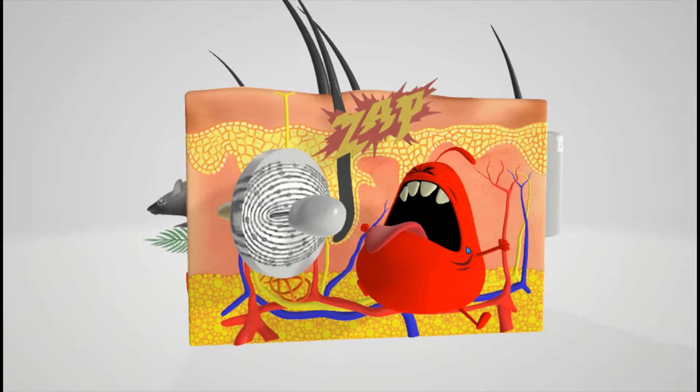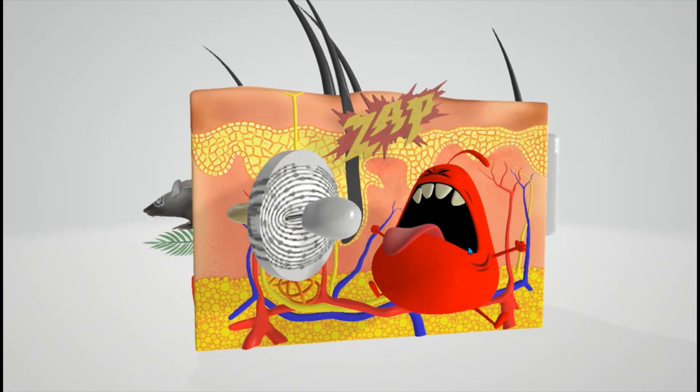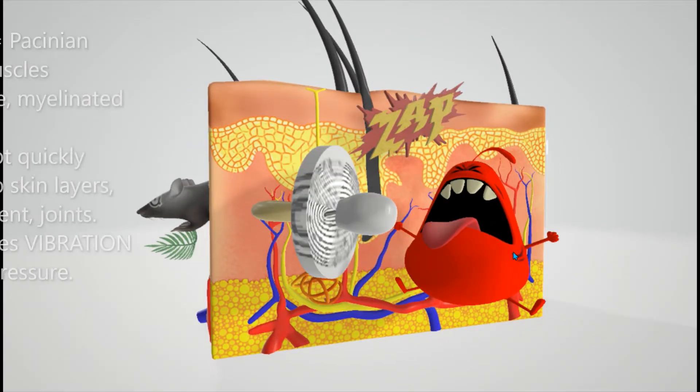Then we go up to this guy over here. This is my favorite one. This is Pacinian corpuscles. Pacinian corpuscles, I like to think of a pacifier, a baby's pacifier. And this little guy over here, he's getting very sad because his pacifier is not working and it's vibrating. Every time he tries to get the pacifier, it just starts vibrating.